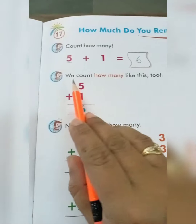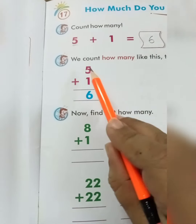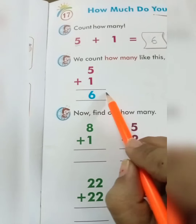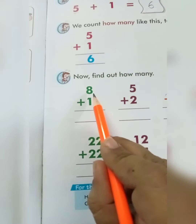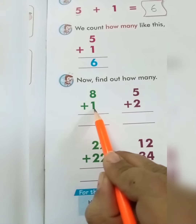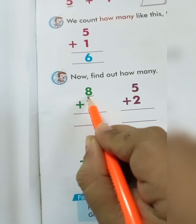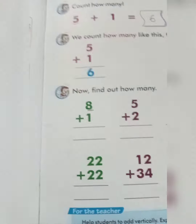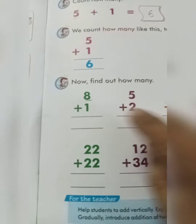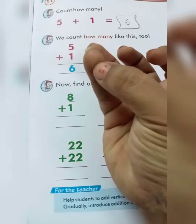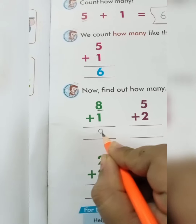You understand? Now we count how many like this 2 — hum aise bhi rakhna hai. 5 plus 1 equal 6. Now find out how many. Look at this: 8 plus 1. Which one is big? Yes, 8 is a big number. So underline the big number. Another block is 1. Means हमें 1 block उसमें add करना है. So 8 after 9. So our answer is 9.